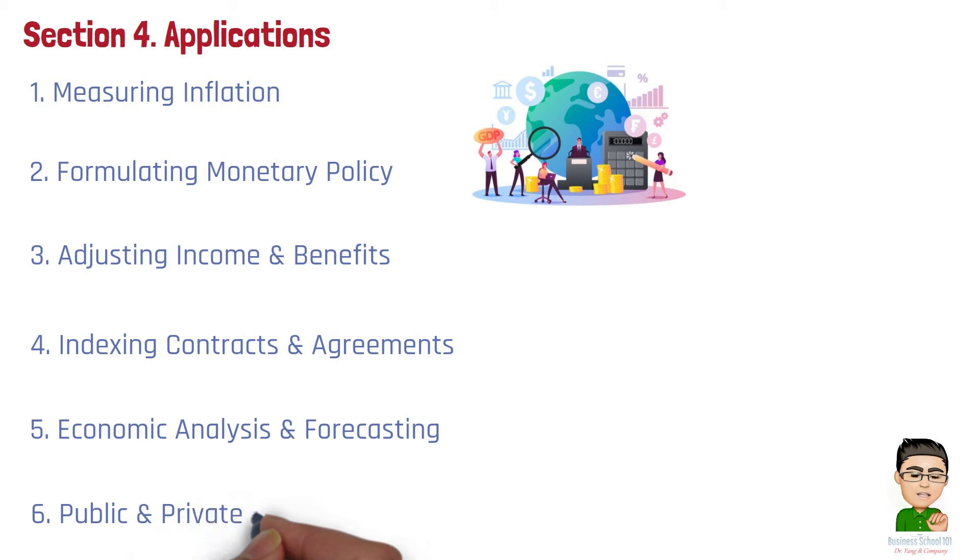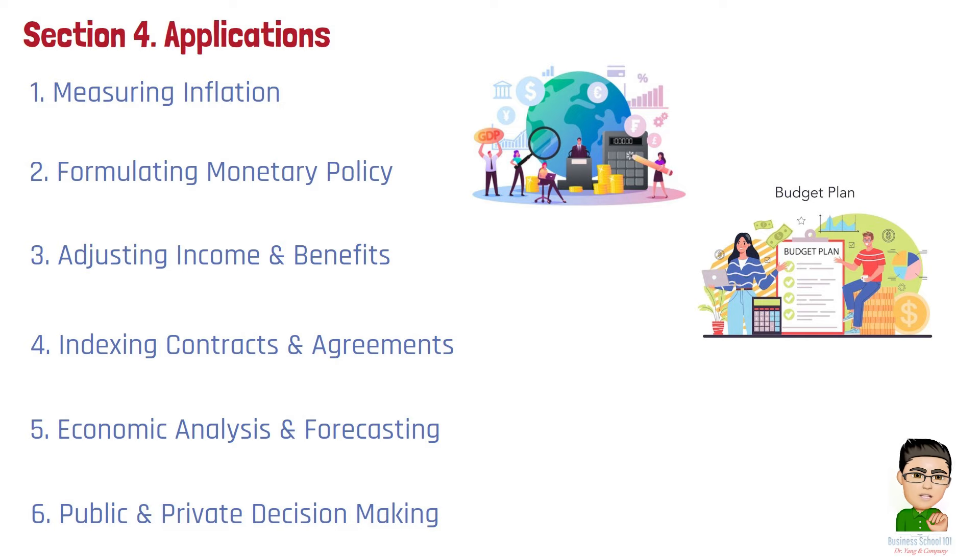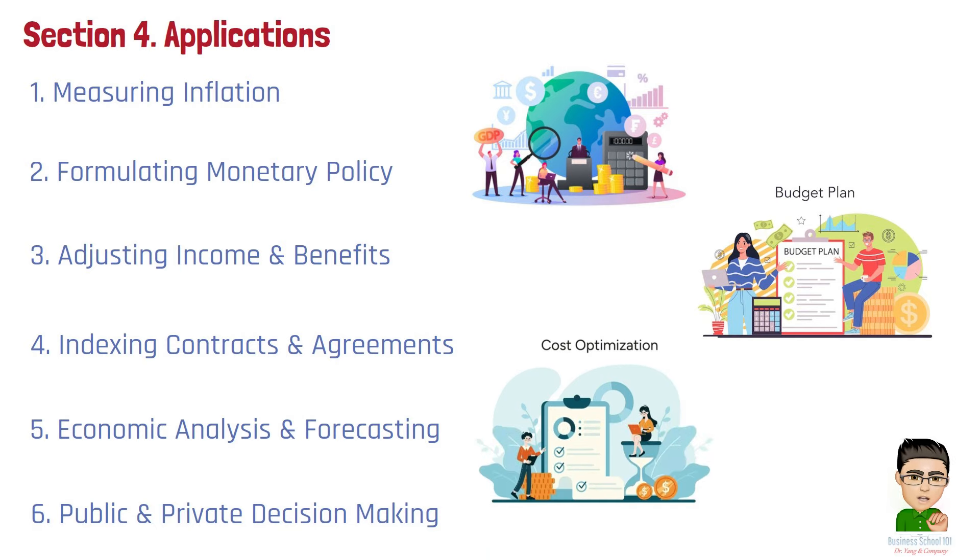Number 6. Public and private decision-making. The CPI is a vital piece of information for both public and private sector decision-making. For the public sector, it influences budgeting and policy formulation. For the private sector, it helps businesses in price setting, cost estimation, and financial planning.